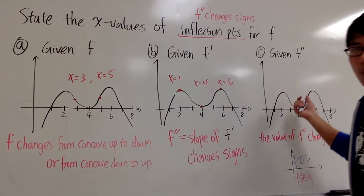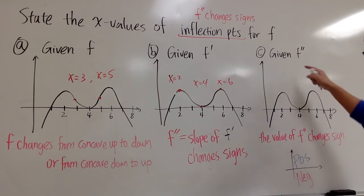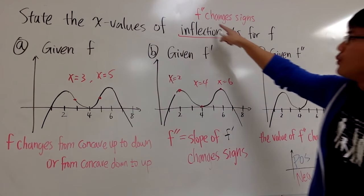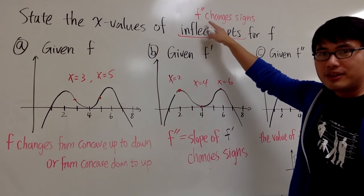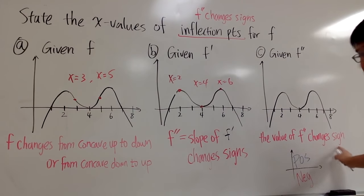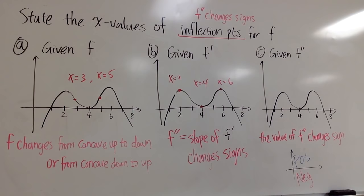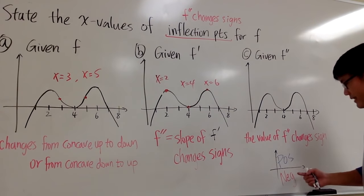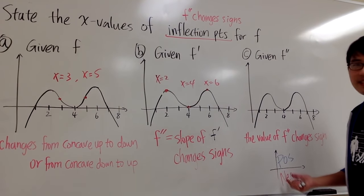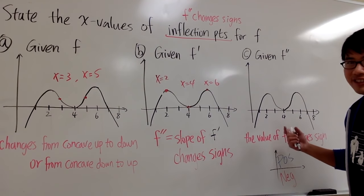For the third situation, when you are given the second derivative already, we have to look at where it changes signs. In other words, where the value of the second derivative changes signs. Remember, anything above the x-axis is positive and anything below it is negative. We are looking for x-intersections where it actually changes sides.